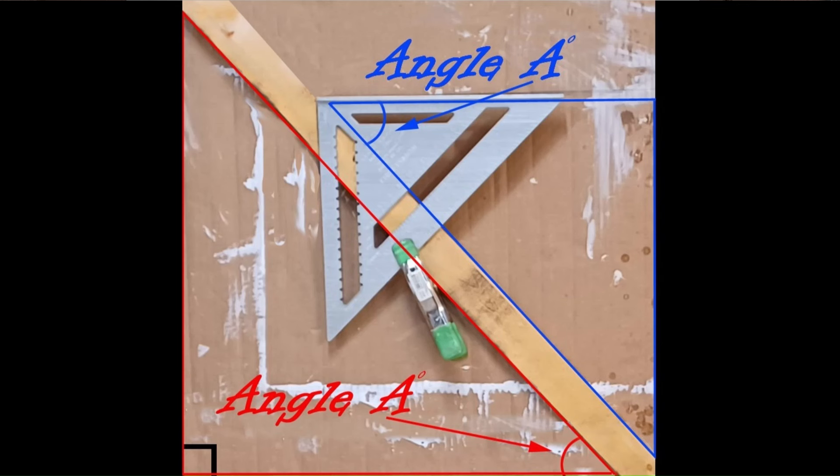The speed square is really measuring this angle up here so that we can know what this angle down here is.